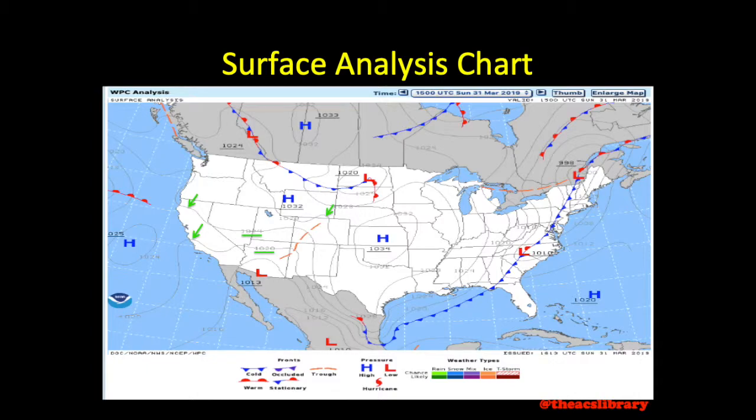Each isobar is separated at an interval of 4 millibars. This means that the closer the isobars are to each other, the more rapid change in pressure one will encounter in that area.